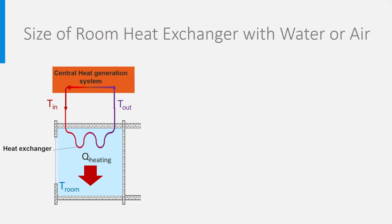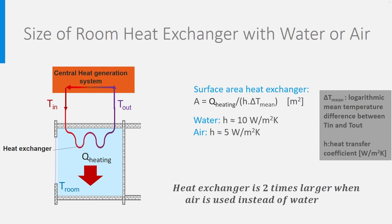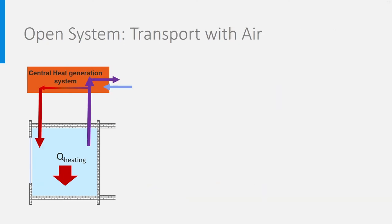There is an additional consideration: the size of the heat exchanger in the room itself. The surface area of the heat exchanger is calculated with a formula involving T_mean — the logarithmic mean temperature difference between T_in and T_out — and H, the heat exchange coefficient between the fluid and the room air. For water, H is around 10 W per square meter Kelvin, while for air it is twice lower, meaning the needed surface area when air is circulating is twice that needed when water is circulated. Such a loss of space is not acceptable, so such air heat exchangers are never used in practice.